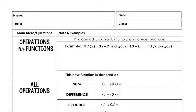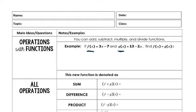Alright, so let's get into this — operations of functions. You can add, subtract, multiply, and divide functions. We name our functions f of x and g of x. We don't just say y; that means basically the same thing as y, but when we have multiple functions we need to be able to name them so we can tell there's a difference. So f of x and g of x are just different names for functions.